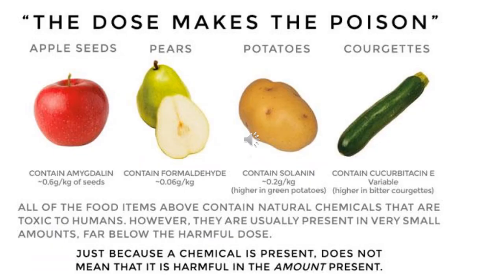What is meant by "dose makes the poison"? This long-known dynamic means that many foods are fine to ingest even though they contain low levels of toxic substances naturally. Plants in the tomato and potato family contain solanine, which is toxic at a certain level. Pears produce formaldehyde, apples contain amygdalin, and squashes contain cucurbitin. All are toxic for humans at high levels but not at low levels — it's the dose that determines toxicity.